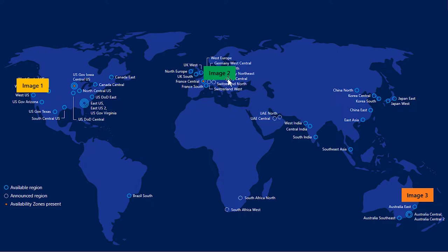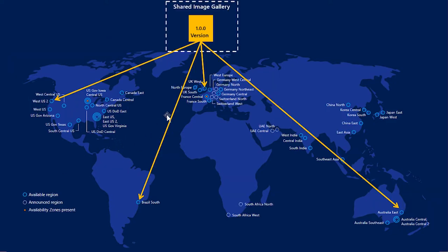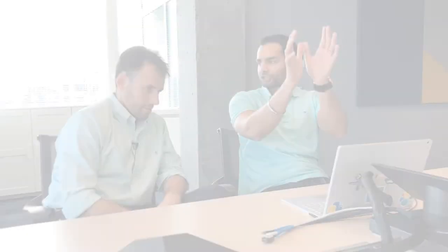Traditionally you would have an image in, like, East US and then another image in West Europe, and you have to keep them in sync. And another in Australia. Now what you can do is make that image a part of a Shared Image Gallery — go from managed image to Shared Image Gallery — and then you can replicate that to multiple regions. It's as easy as specifying the name of the region. We handle the replication on the back end for you.